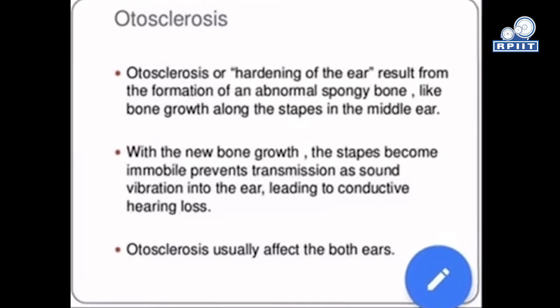Otosclerosis, or hardening of the ear, results from the formation of an abnormal spongy bone-like growth along the stapes in the middle ear. With the new bone growth, the stapes becomes immobile, which prevents transmission of sound vibrations into the ear, leading to conductive hearing loss. Otosclerosis usually affects both ears.